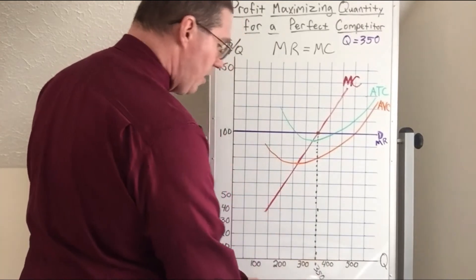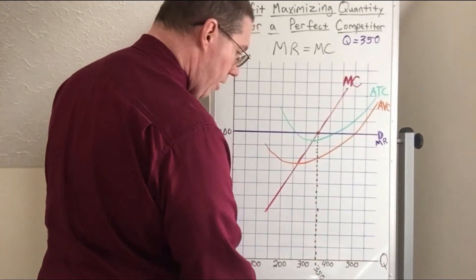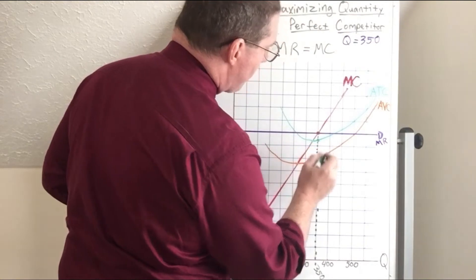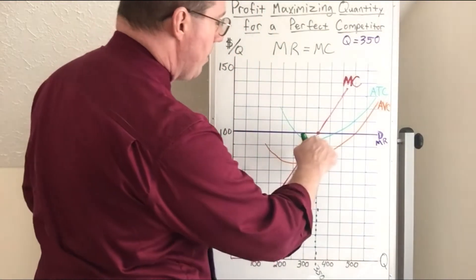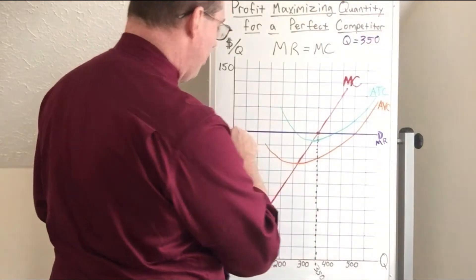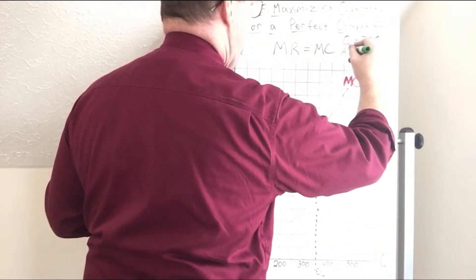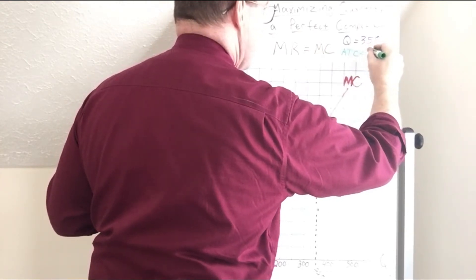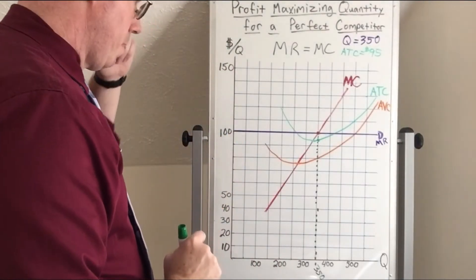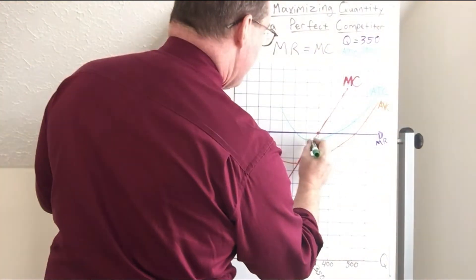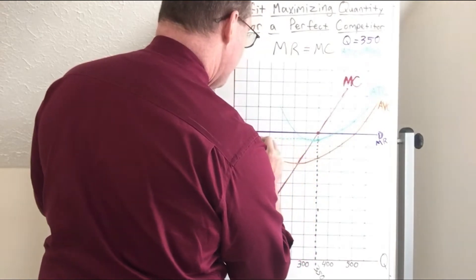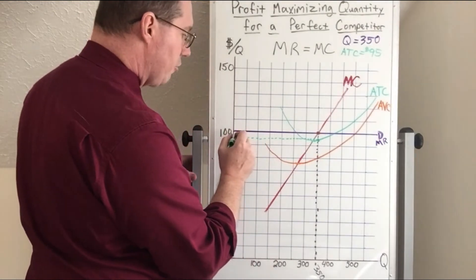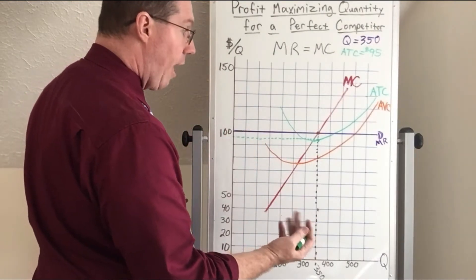At a quantity of 350, we can now identify the average total cost, which is in green. It looks to me like average total cost intersects that quantity about halfway, so average total cost is going to be $95 per unit. We already know that the price is $100. We're going to put a dotted line over here — do you see our rectangles forming? Price is greater than average total cost, which means that this company is going to earn a profit.